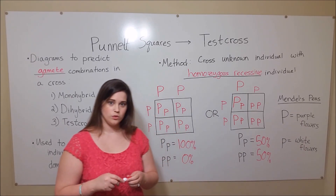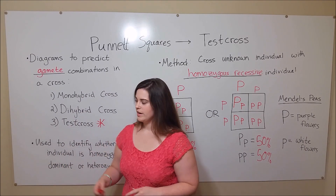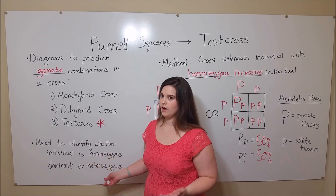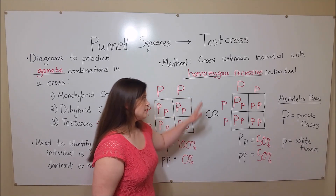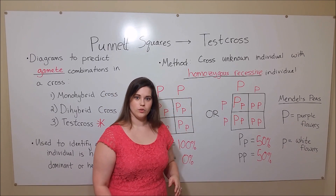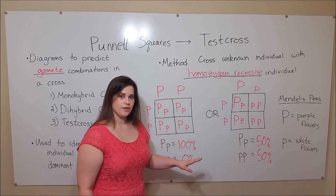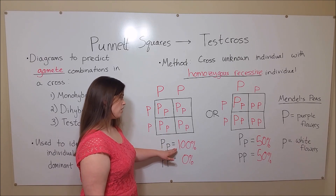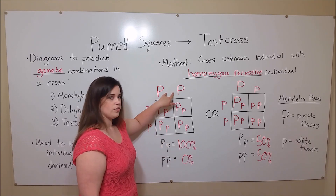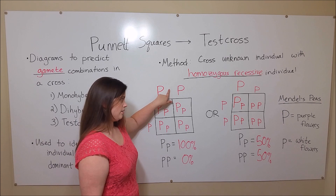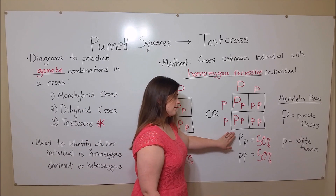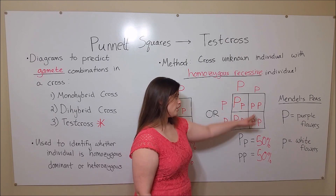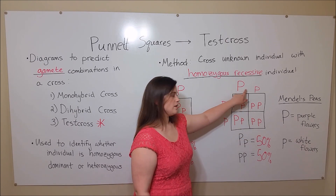So this is how a test cross is useful. If you have an unknown individual with purple flowers but you don't know if it's homozygous dominant or heterozygous, you can cross it with a homozygous recessive individual. Based on the offspring you get — if you get 100% purple offspring, or if you get 50% purple offspring and 50% white offspring — you now know the genotype of your unknown individual.